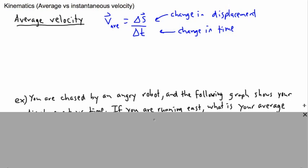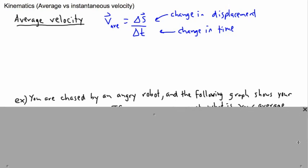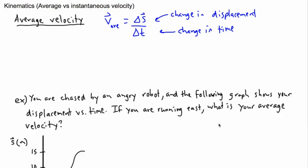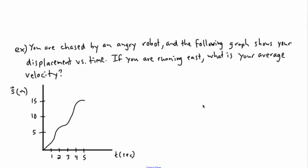So here's the example: you're being chased by an angry robot, and the following graph shows your displacement versus time. Here is your displacement — either 's' or 'd' with a vector sign — and this is your time. If you're running east, what is your average velocity?